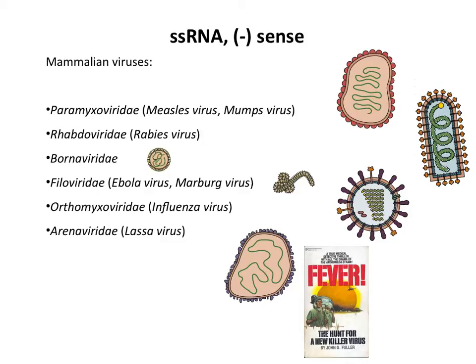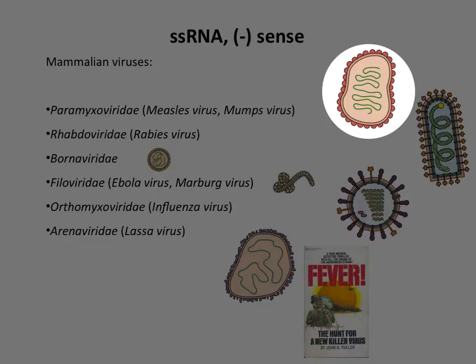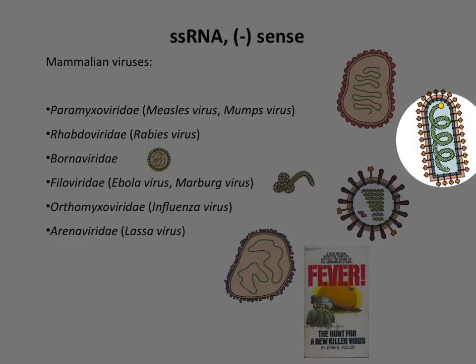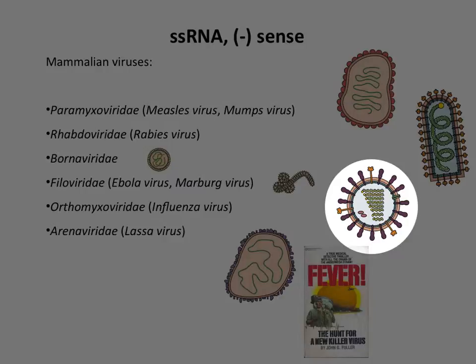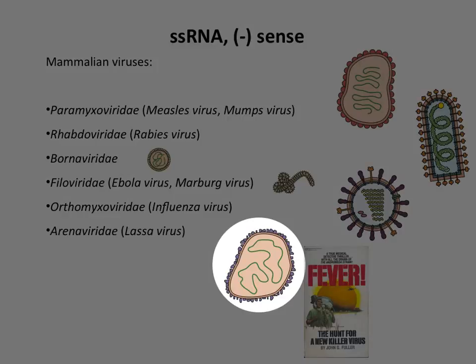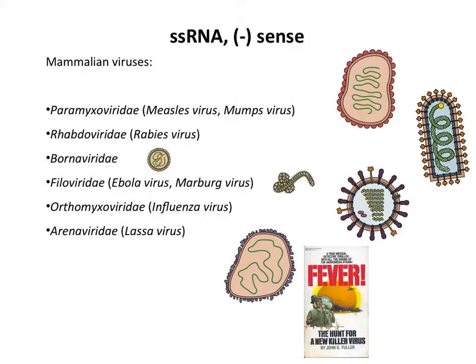That brings us to the negative-strand single-stranded RNA viruses—lots of pretty nasty pathogens here. We have measles and mumps virus, which are paramyxoviruses. Rabies virus is the bullet-shaped virus. The filoviruses include Ebola and Marburg. Influenza virus belongs to the family Orthomyxoviridae. And Arenaviridae includes the famous Lassa virus. Lassa was the topic of a book called Fever, written in the 1960s. When I read that book, it made me want to be a virologist—that's why I'm doing this today.